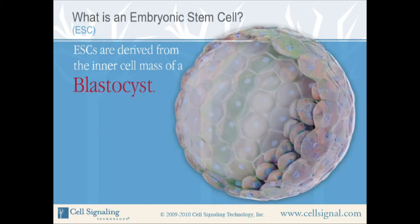A blastocyst contains approximately 70 to 100 cells and consists of an inner cell mass, also called the ICM, inside a cavity surrounded by a layer of cells called the trophoblast.